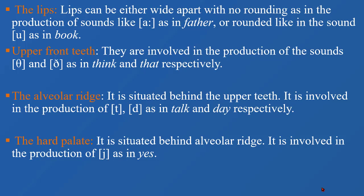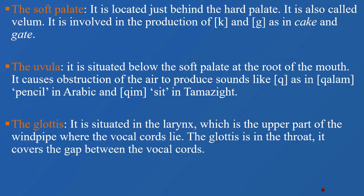Just behind the alveolar ridge we have the hard palate, which is involved in the production of sounds like 'y' as in 'yes.' Then we have the soft palate, also called the velum, situated just behind the hard palate. It is involved in the production of sounds like k and g, as in 'cake' or 'gate.'